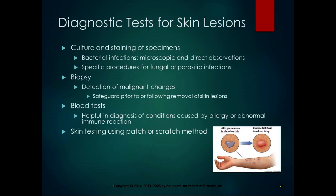When testing skin lesions, they might do culture and staining of specimens to see if it's a bacterial infection. They might use microscopic and direct observation or specific procedures for fungal or parasitic infections, because fungi and parasites do not grow in culture the same way that bacteria do. A biopsy is where you take an individual tissue sample from a small area to detect malignant changes — dysplasia or abnormal cell changes.